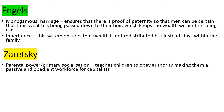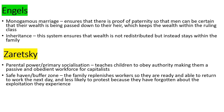Zaretsky argues that parental power and primary socialisation means the family keeps capitalism going because it teaches children to obey authority, making them a passive and obedient workforce for the capitalists when they grow up. The family teaches you to be obedient to authority by obeying your parents, and that gets you ready to obey your boss when you're older. Zaretsky also discusses the safe haven and buffer zone - the idea that the family replenishes the workers, who come home to a safe haven that distracts them from exploitation and poor working conditions, so they're less likely to protest by going on strike.